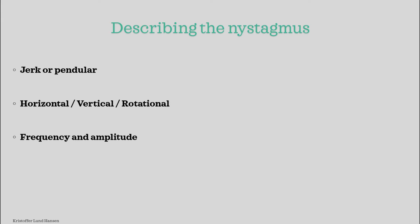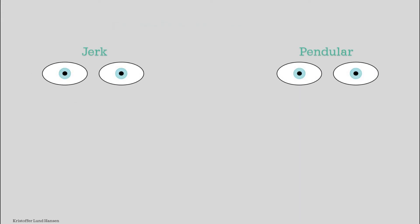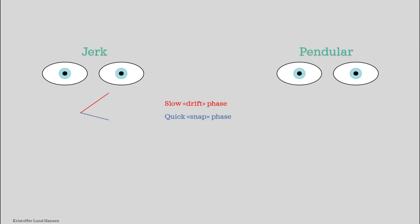First, we determine whether we have a jerk or pendular nystagmus. The more common variant is jerk nystagmus, which has two phases: a quick phase and a slow phase. The eyes will first drift slowly away from the target before they quickly snap back. They will then again slowly drift away before snapping back, and this keeps repeating.